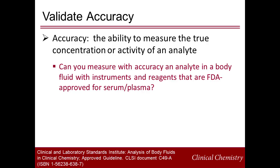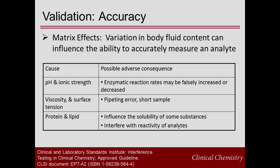The recommended place to start the analytical body fluid validation is by establishing accuracy, or the ability to measure the true concentration or activity of an analyte. The goal is to confirm that an analyte in a body fluid matrix can be measured accurately with instruments and reagents that are FDA approved for plasma or serum. The predominant issue that contributes to potential interference when testing body fluids is the impact that an alternate matrix has on accuracy. Matrix interference is caused by any variation in the composition of the sample that influences the ability to accurately measure an analyte.